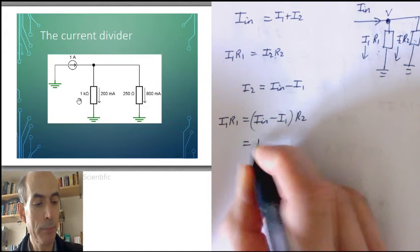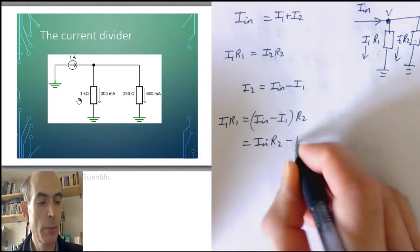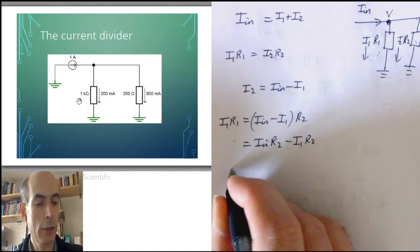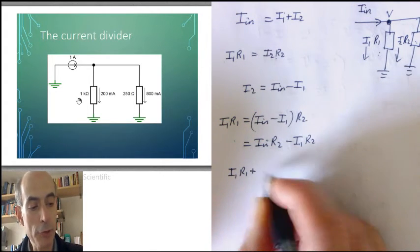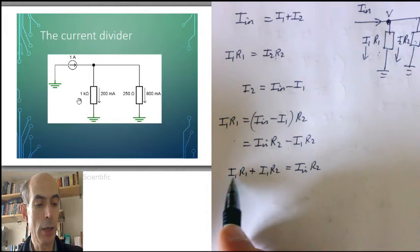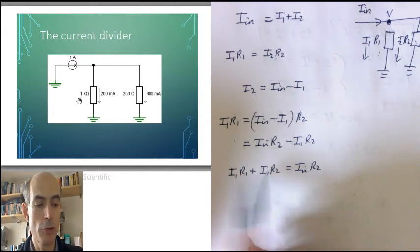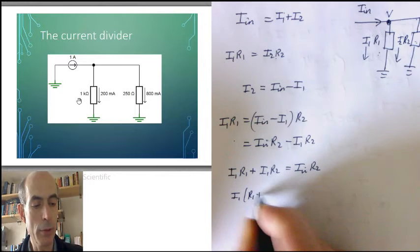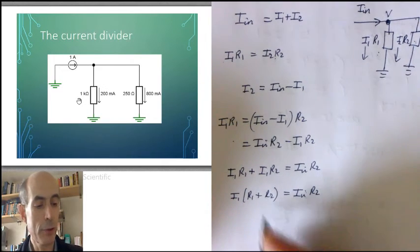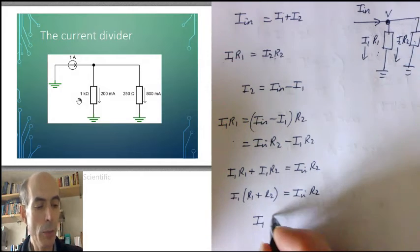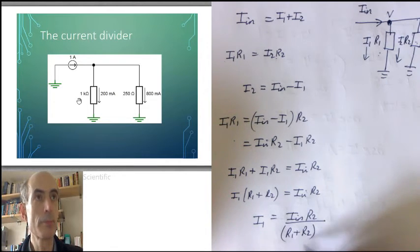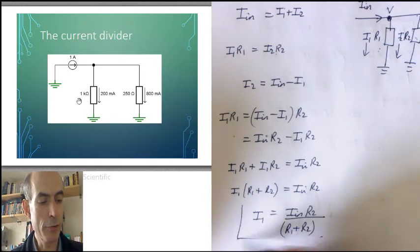Well, multiply out this bracket, I in times R2 minus I1 times R2. Bring this term here over to this side of the equation. That gives us I1 R1 plus I1 R2 equals I in R2. Extract I1, the common factor of I1, from these two terms. I1 times R1 plus R2 equals I in R2. And then just divide by R1 plus R2, giving us the final equation. I1 equals I in R2 over R1 plus R2. That's it. That is the current divider formula.